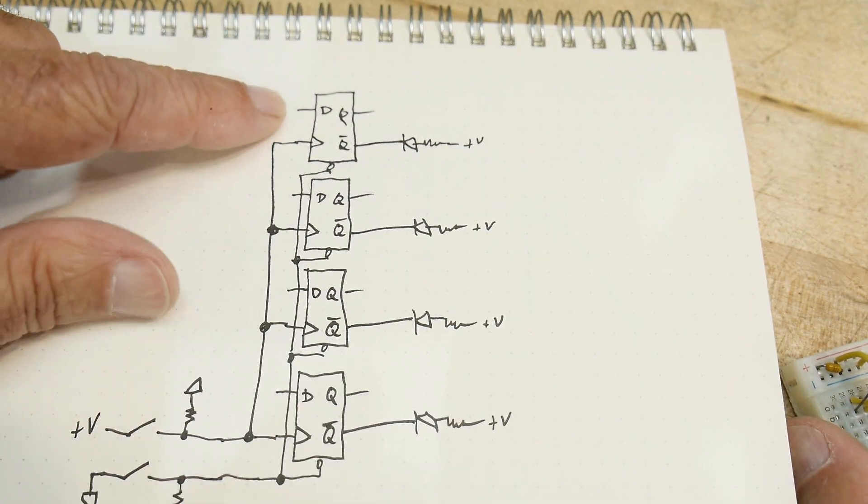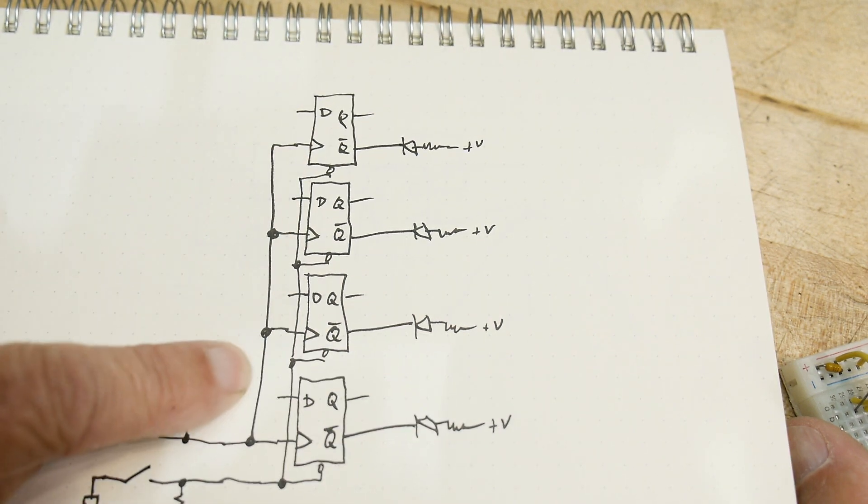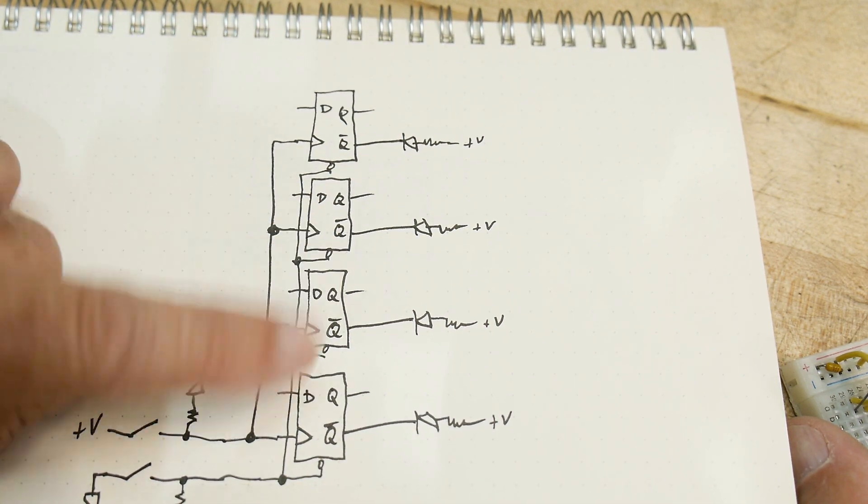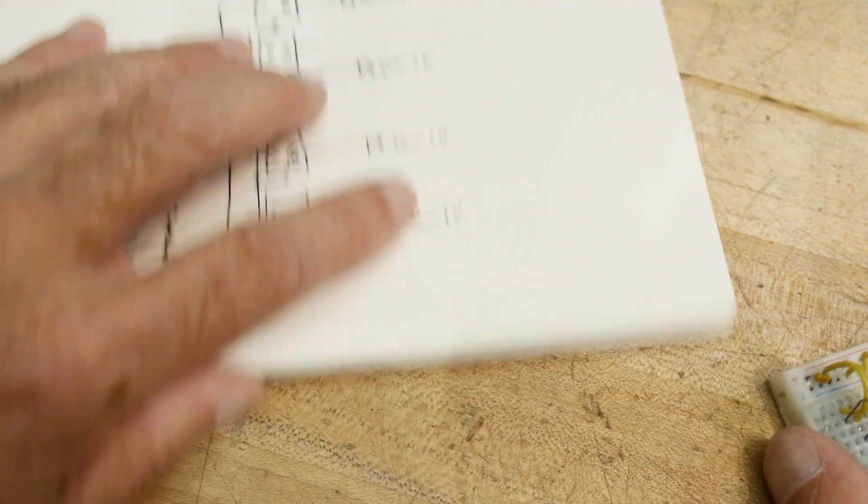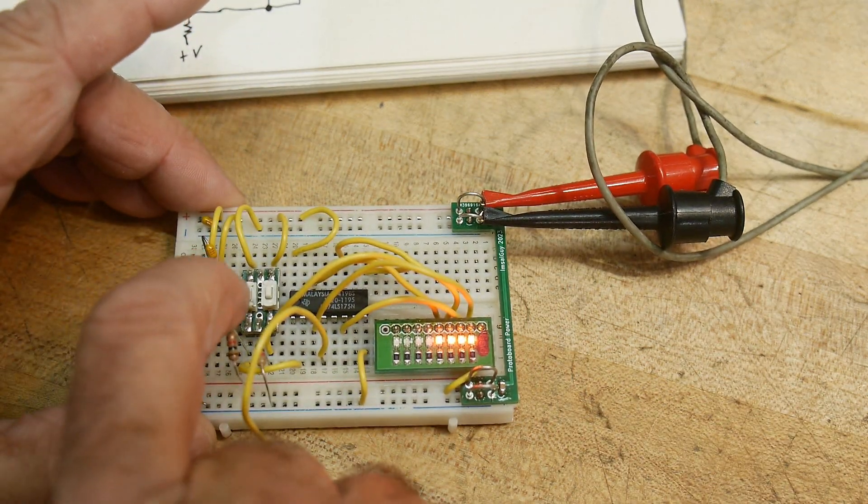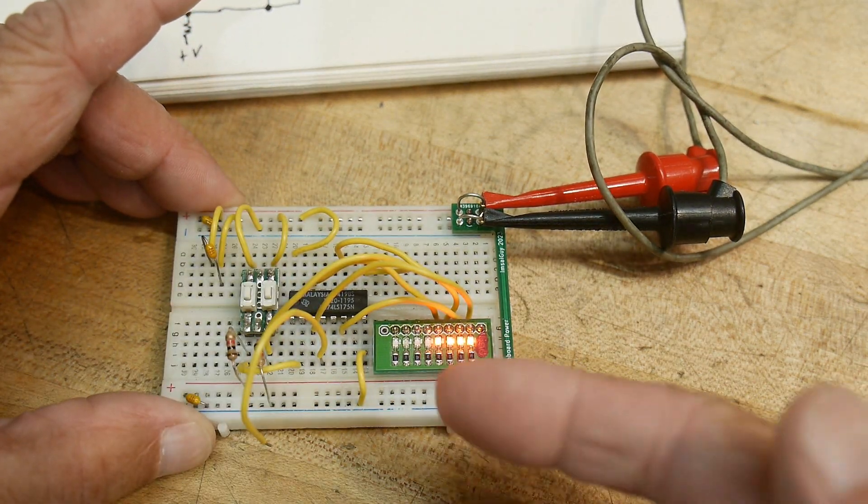Well, that's because we have floating inputs. The Ds are all floating, which means they're all high. So, we have high, high, high, high. When we clock the device, it'll take all those highs, and it will clock them in. Okay. So, let's do that again. We'll clear it, and then we'll clock in all the highs.